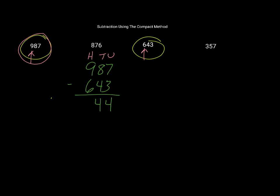Now in order to check my work, I can just add these two numbers together here and I should get 987 as an answer. So if I go 643 plus 344, that should give me 987.